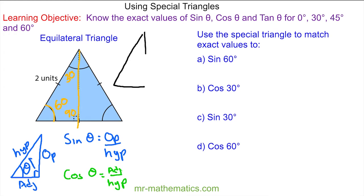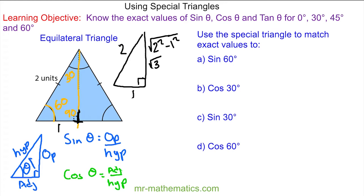Sketching the triangle again: we know the full length is 2. Since we've bisected the angle at 90°, we've also bisected the base, making that half of 2, which is 1. Using Pythagoras's theorem: √(2² − 1²) = √(4 − 1) = √3. So the third length is √3.